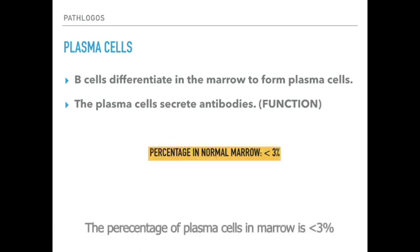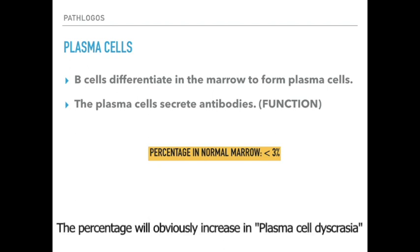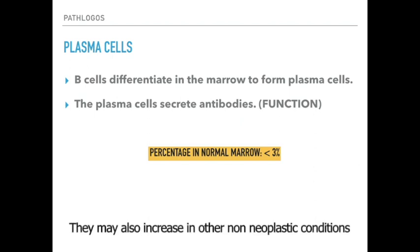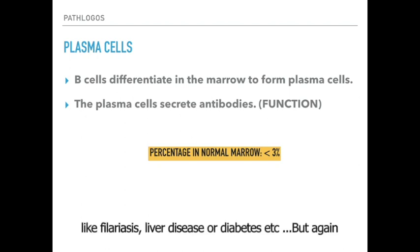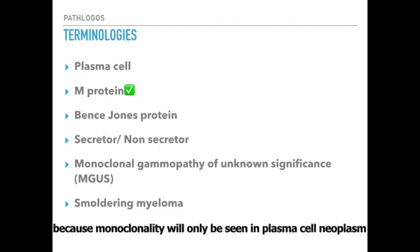The percentage of plasma cells in a normal marrow is less than three percent. This percentage will obviously increase in plasma cell dyscrasias. They may also increase in other non-neoplastic conditions like filariasis, liver disease, and diabetes. But the plasma cells in these conditions would be polyclonal and not monoclonal, because monoclonality will only be seen in plasma cell neoplasias.